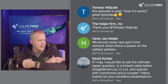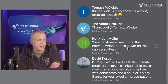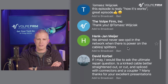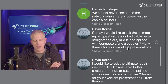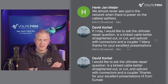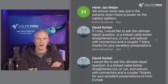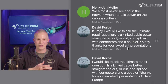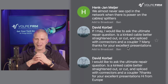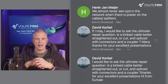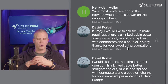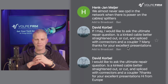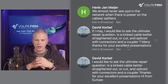Thomas says this episode is really great. And I have to say, this episode is just yet another one where I'm like — I've always thought of corrosion as just rust, something that happens when moisture gets on our plant components. But you really broke this down to show how much more involved there is with the chemistry. Hank Jan asks: we almost never see CPD in the network when there is power on the cables and splitters. That's interesting input.